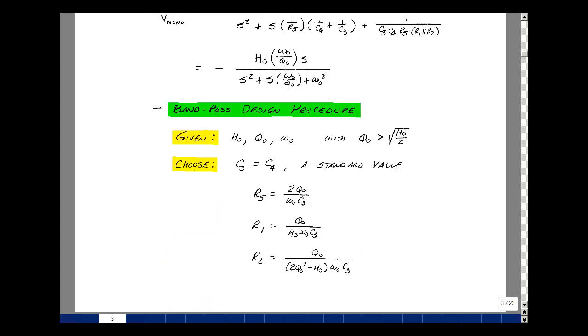In Lab 7, we also developed a design procedure for this bandpass filter, where we pick two capacitors equal to each other. So given the values of H naught, Q naught, and omega naught, and with this constraint, we found that Q naught had to be greater than the square root of H naught over two. If that's not true, we'll have to pick some other constraint. But I want to pick my design spec so that this will work. Then we show we could pick the resistor R5, R1, and R2 in terms of these three specs and this initial pick. If these become impractical, then we go back and modify our first pick.